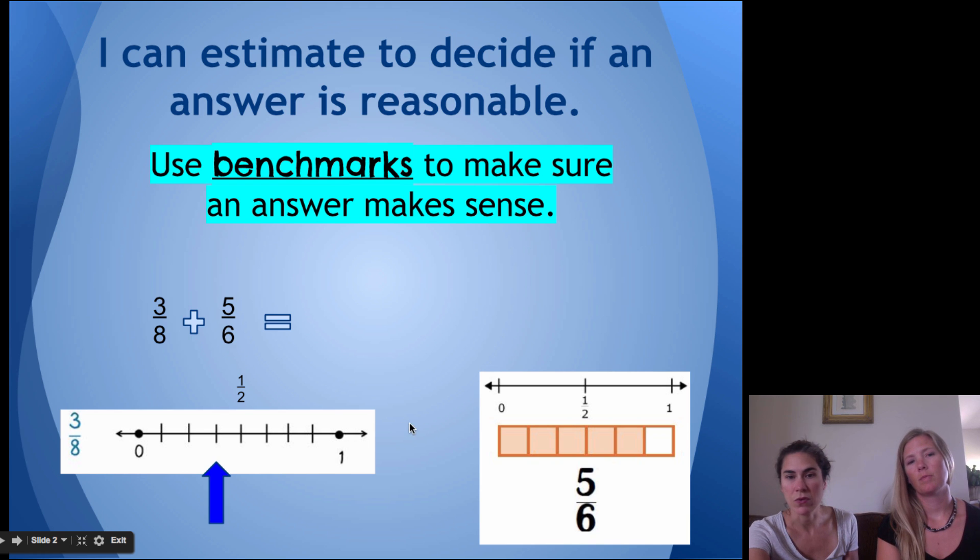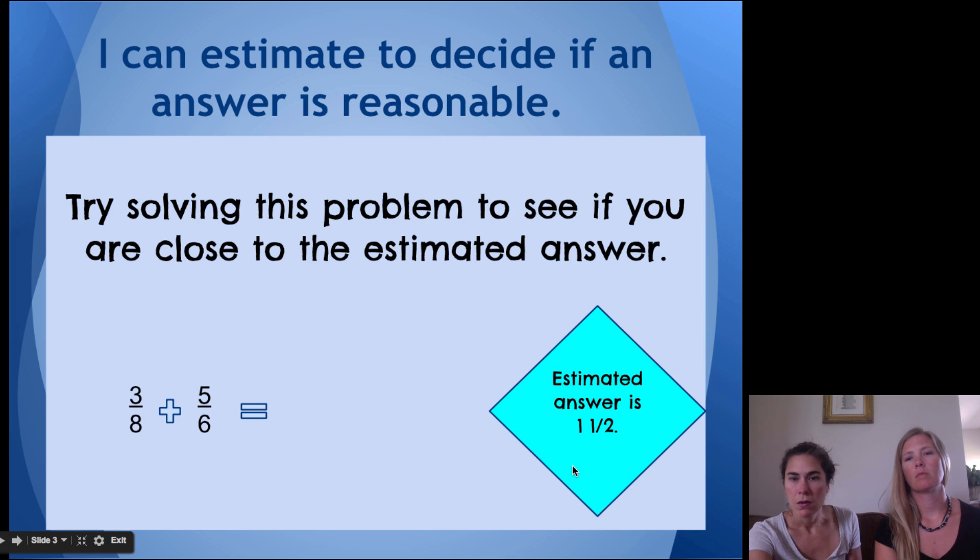Then we have five-sixths over here. And if you look here with five-sixths sort of represented in a different visual way, it's really close to one. So, when I'm looking here now, I can think, well, I'm close to a half, and I'm close to one whole. So, my estimated answer would be one-and-a-half. Right. And again, that's just a guess. It's just a guess as to what you think the answer will be close to.